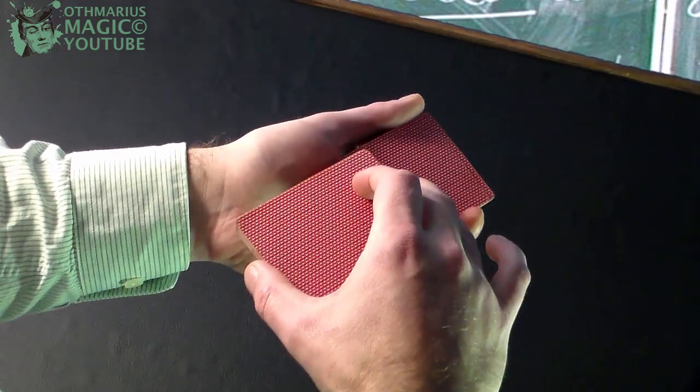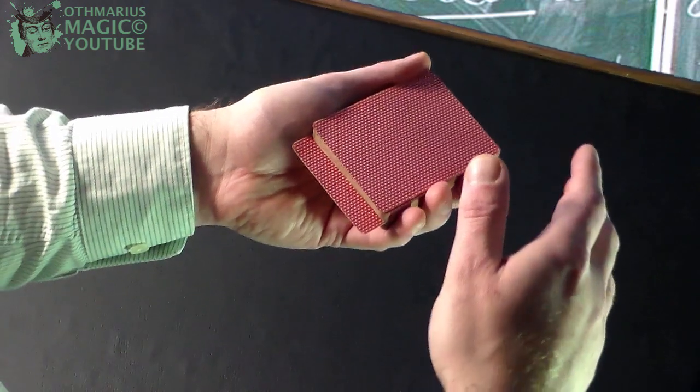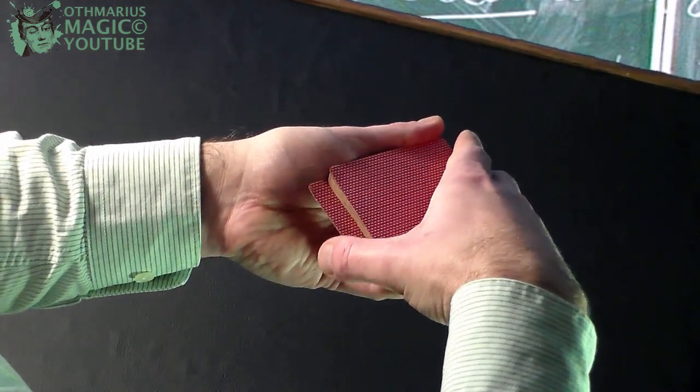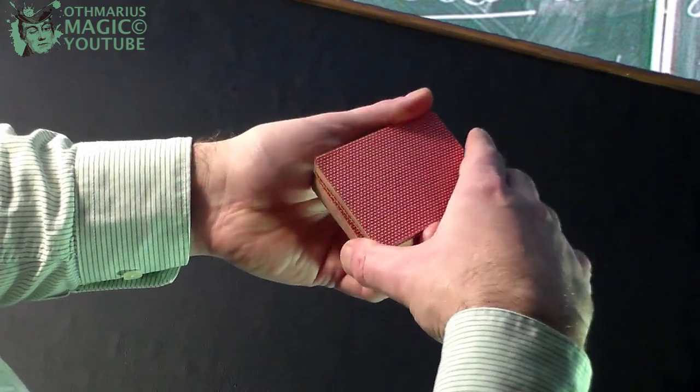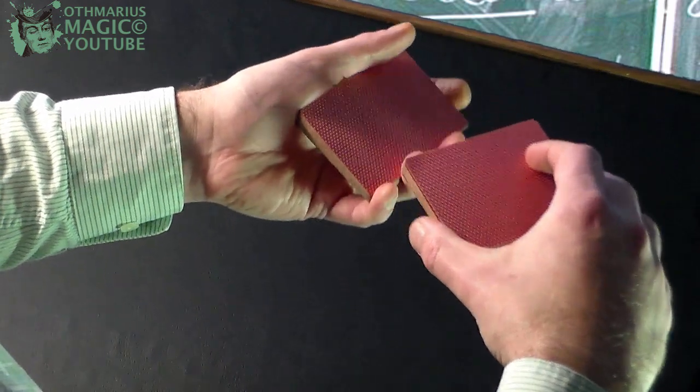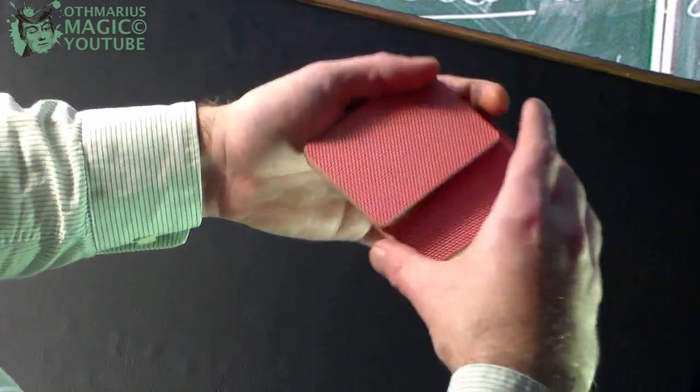Of course, you can create a break underneath the in jog. Repeat the same motion but instead of pushing the in jog down, this time you are going to slightly pull it upwards with your thumb creating a break. Shifting the packages now, the in jog will go to the bottom of the deck and the card underneath the in jog moves to the top.